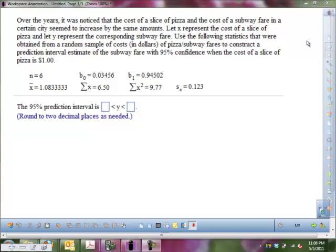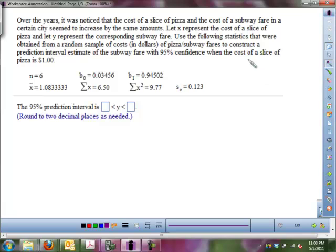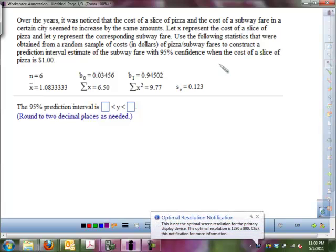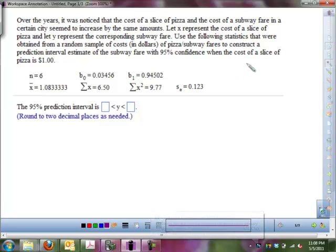Let X represent the cost of a slice of pizza and Y represent the corresponding subway fare. Use the following statistics that were obtained from a random sample of the cost in dollars of pizza and subway fare to construct a prediction interval estimate for the subway fare with 95% confidence when the cost of a slice of pizza is a dollar.